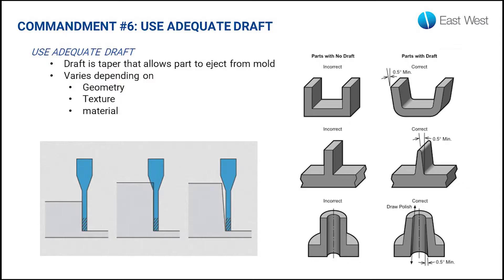Commandment number six is to use adequate draft on our injection molded parts. Draft is the taper on selected surfaces inside or on an injection molded part so it can eject from the mold. Without draft, the steel on either side of those surfaces would drag across them when the mold opens, causing unsightly marks and potentially ruining the mold. We put at least a half a degree of taper on surfaces in the direction of pull so that we can properly eject those parts.